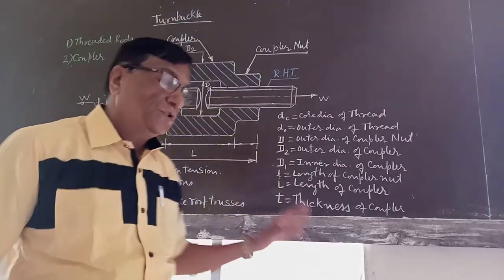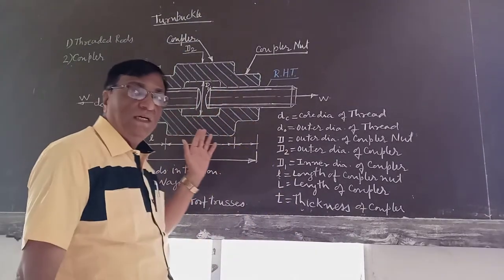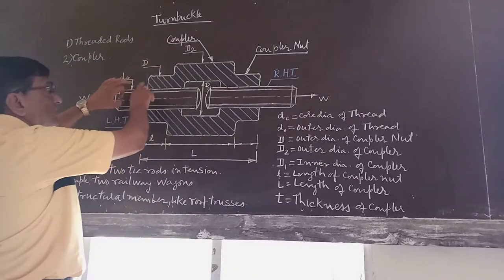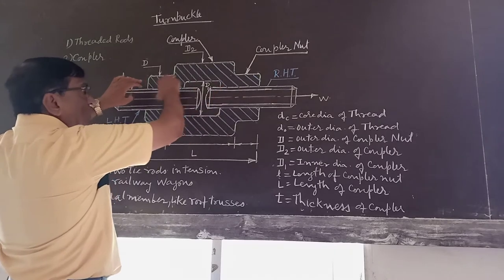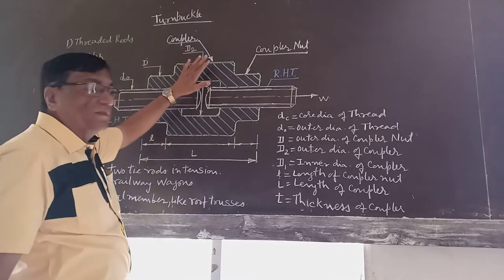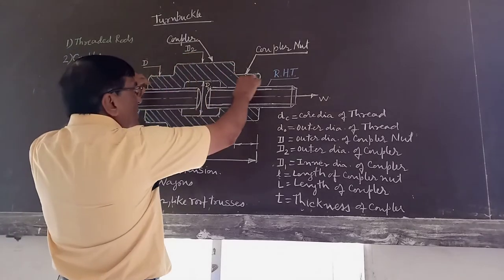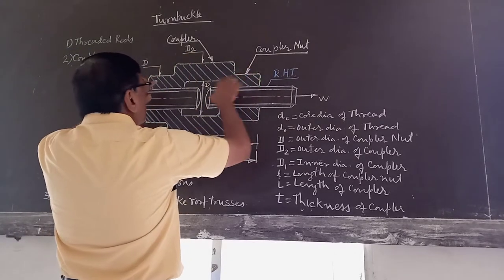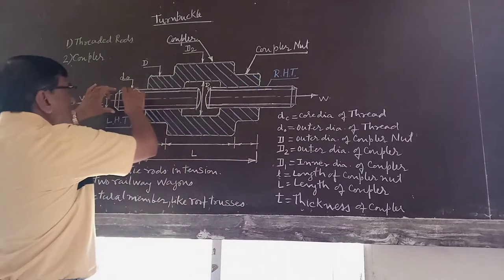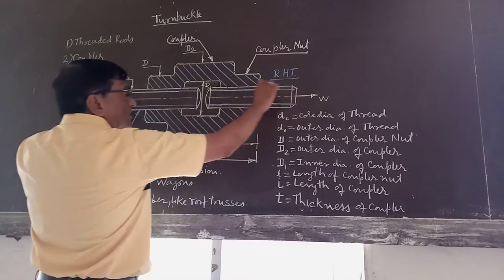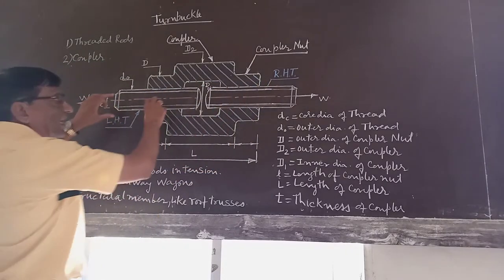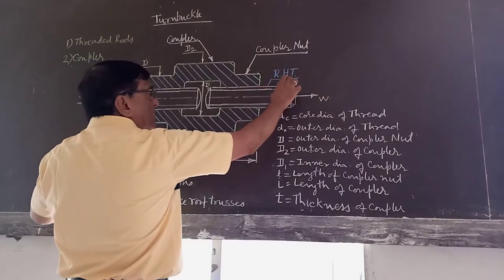This figure shows the sectional view of the turn buckle. This is in blue color — section lines. That is the coupler, and this portion is known as the coupler nut. In complete, it is known as the coupler. These are two threaded rods: this rod is left-hand threaded, and this rod is right-hand threaded.